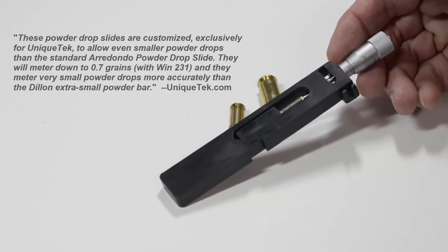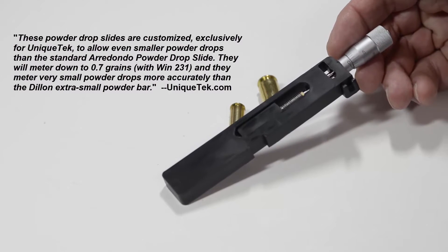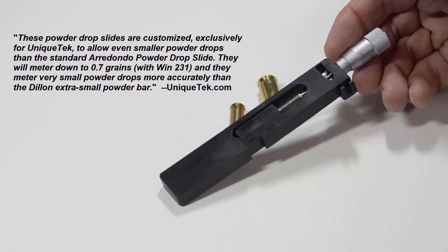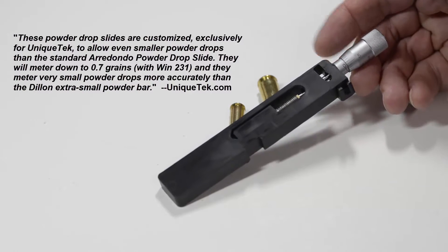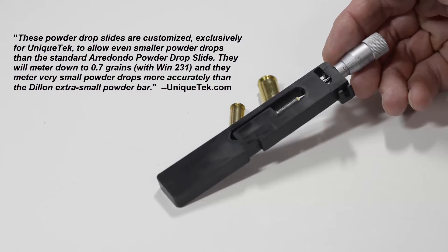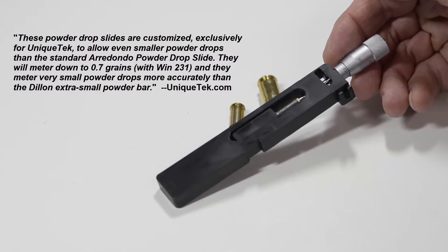Regarding more accurate charges, the Unique Tech website states the following regarding the Arredondo powder bar: These powder drop slides are customized exclusively for Unique Tech to allow even smaller powder drops than the standard Arredondo powder drop slide. They will meter down to 0.7 grains with Winchester 231 and they meter very small powder drops more accurately than the Dillon extra small powder bar.